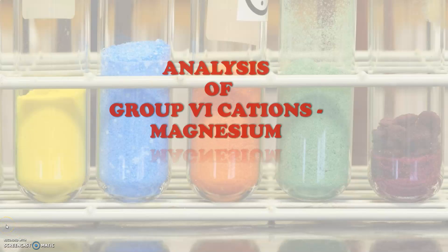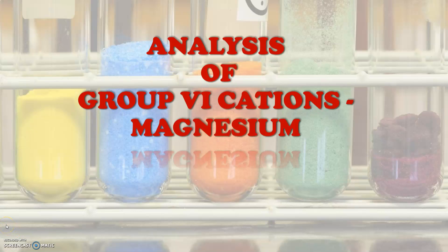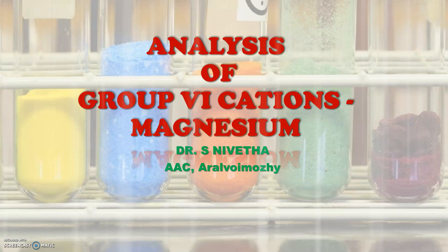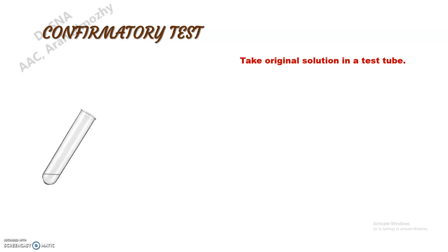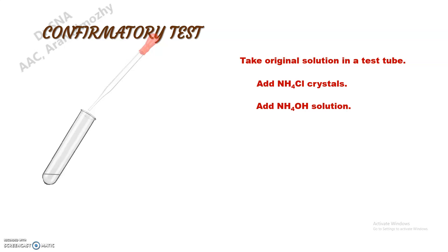Let's see how to analyze magnesium. It is a sixth group cation and how to confirm this: first, take the original solution in a test tube and add ammonium chloride crystals and mix it well, and then add ammonium hydroxide solution.